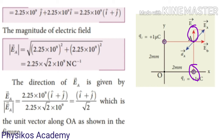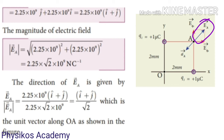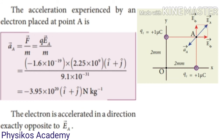Q1 charge contributes to point A in the j-direction. Q2 charge contributes to point A in the i-direction. The combined effect of Q1 and Q2 at point A means the EA direction is along (i + j) / √2, which is the diagonal direction.